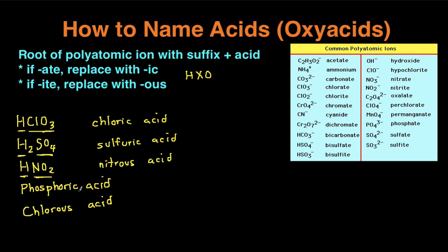So here, next example is phosphoric acid. So it ends in IC, which means it originally had ATE. So it was originally going to be phosphate.